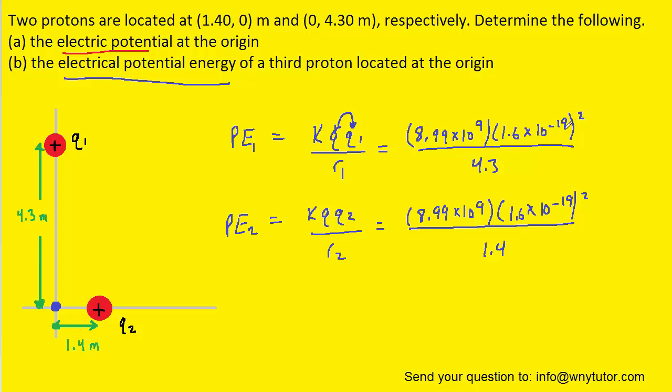Same thing with the second setup of potential energy. We're multiplying the proton at the origin by another proton, so we can represent that as 1.6 times 10 to the minus 19 squared.